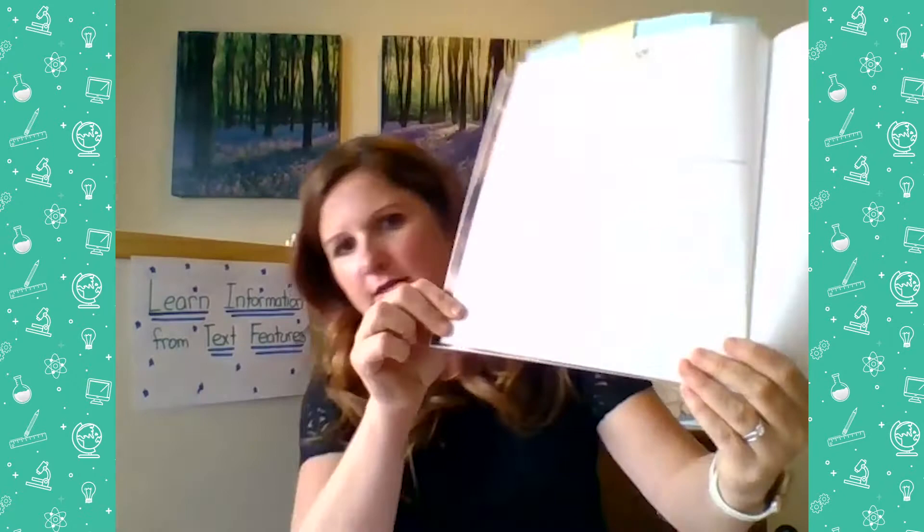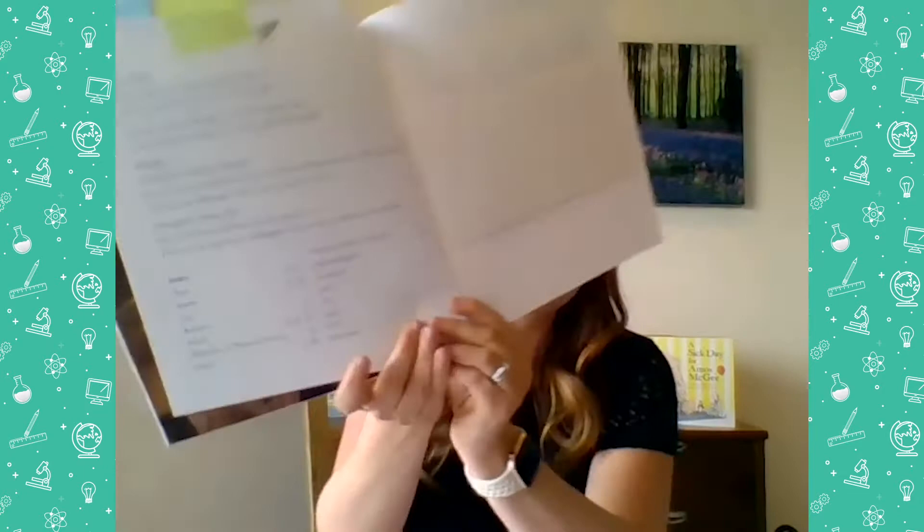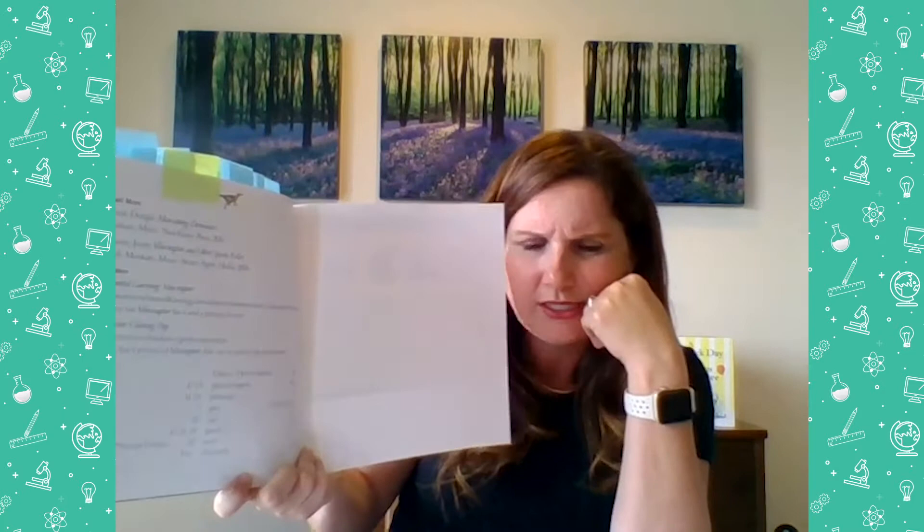Today we're going to talk about another text feature called the index. Here's the index right here at the bottom. You might be thinking, 'Ms. Boyle, that's just a glossary — a list of words!' But no, the index is a little bit different. Yes, it is a list of words, but in the glossary it gave definitions — what those words mean. In the index, it just gives the word and then page numbers.